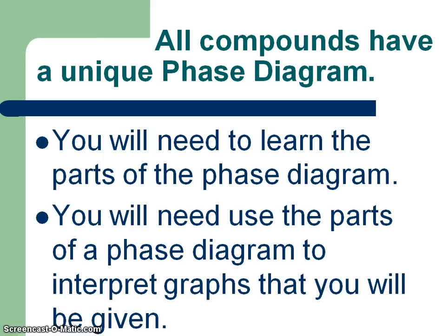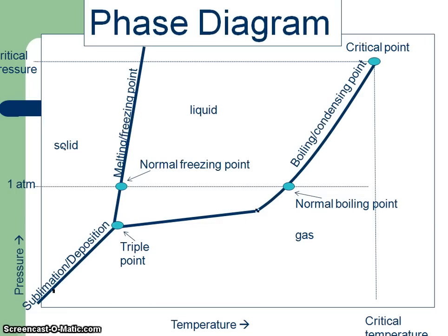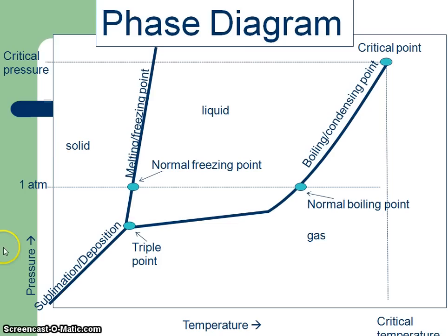Now we're going to go into phase diagrams. You'll need to learn all parts of the phase diagram and be able to tell me what's happening at a certain temperature and pressure. You need to be able to interpret what's on the graph. This is what a phase diagram looks like, and you should be able to do all parts of it.